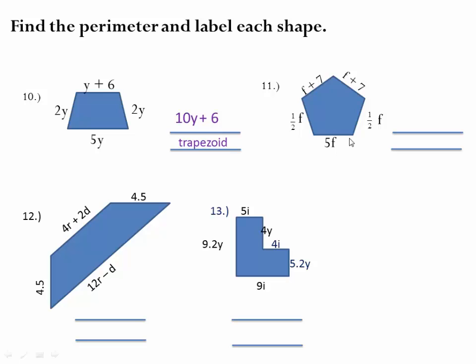So this shape. We're going to add the like terms first. I see a bunch of f's around here. I see a fraction. Let's deal with them first. Get them out of the way. A half and a half is one whole. One whole and 5 gets us 6. So we have 6 f's so far.